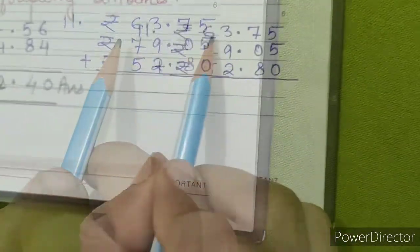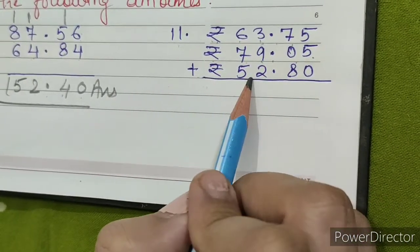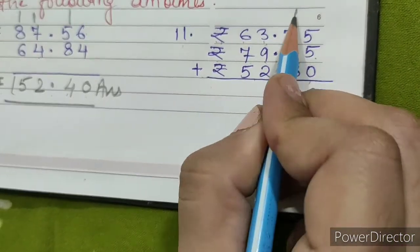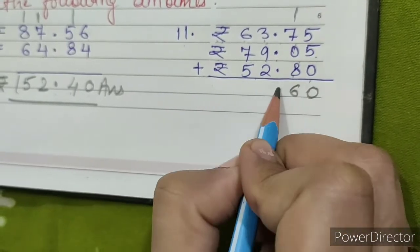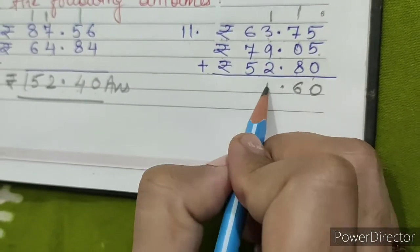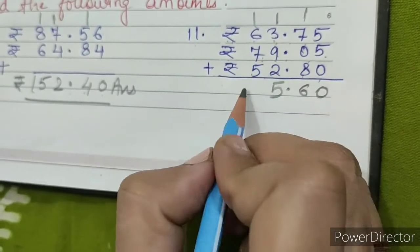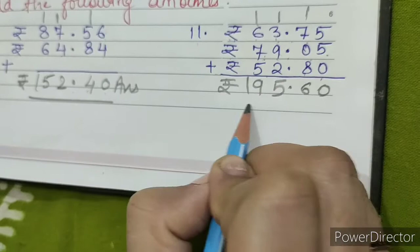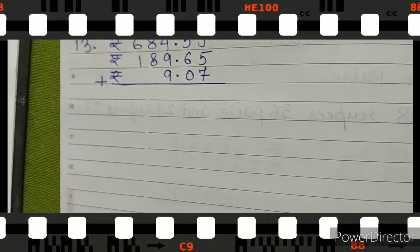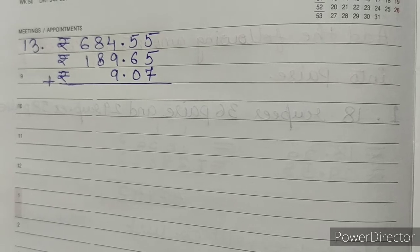Question number 11: rupees 63.75, rupees 79.05, plus rupees 52.80. So 5 plus 5 equals 10, write 0 carry 1. 8 plus 8 equals 16, write 6 carry 1. 4 plus 9 plus 2 equals 15, write 5 carry 1. 7 plus 7 equals 14, plus 5 equals 19. 195.60, this is our answer.